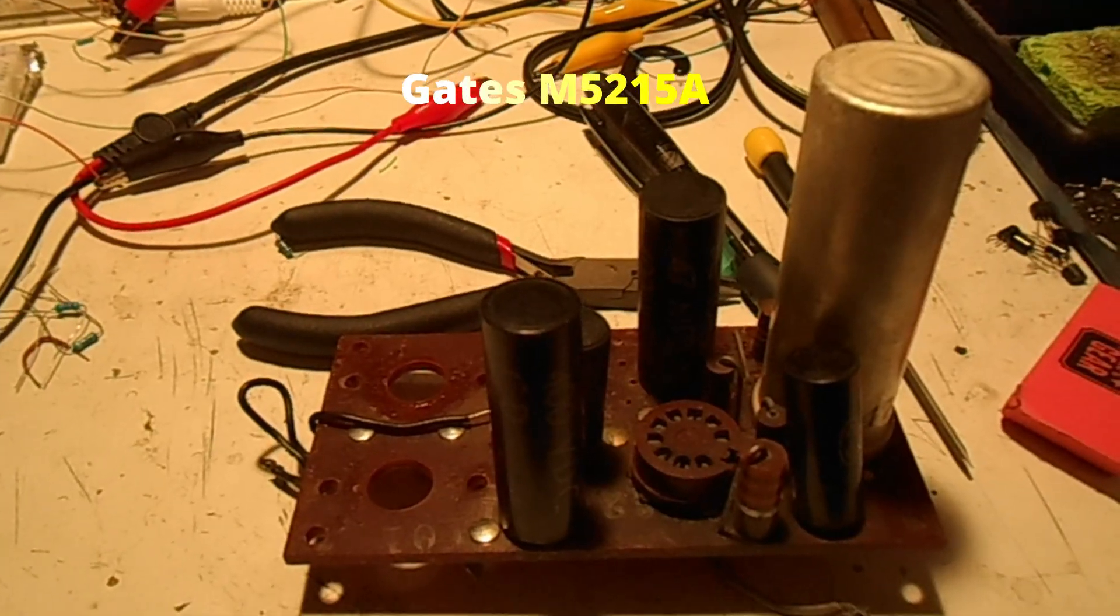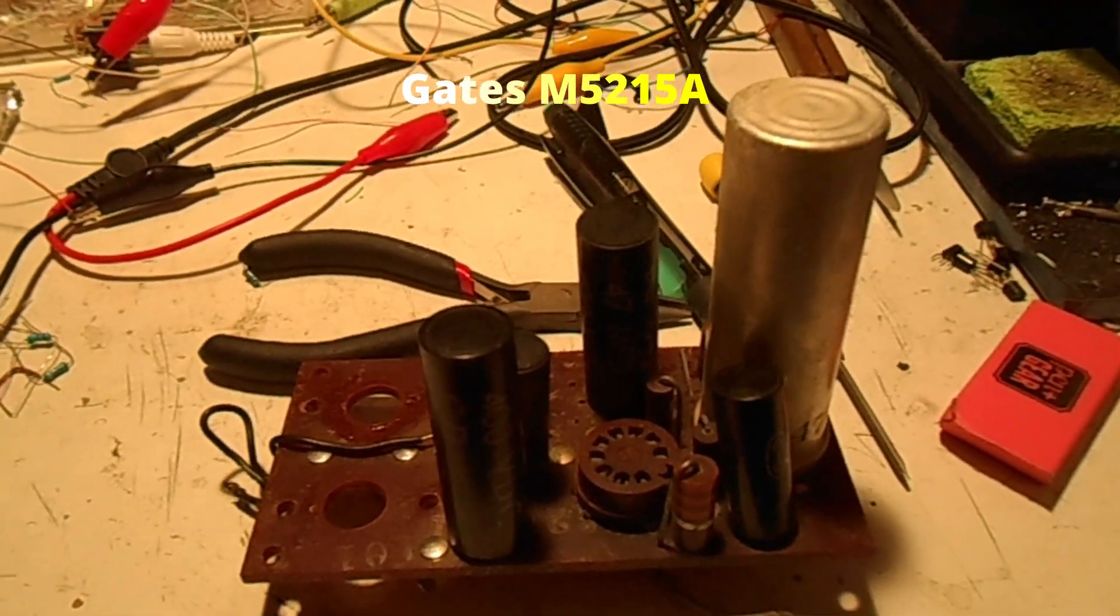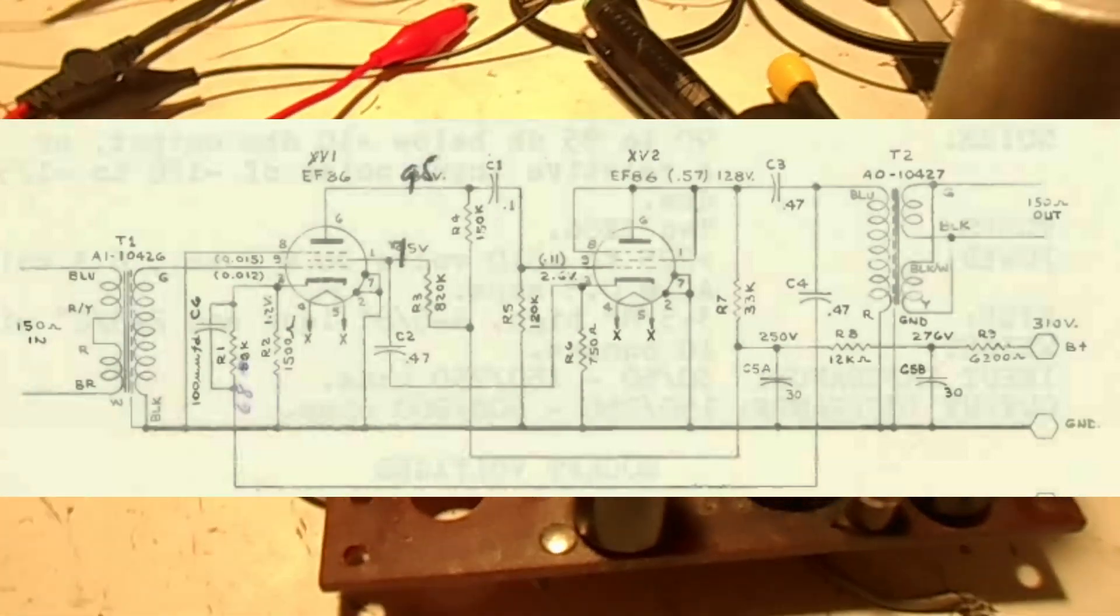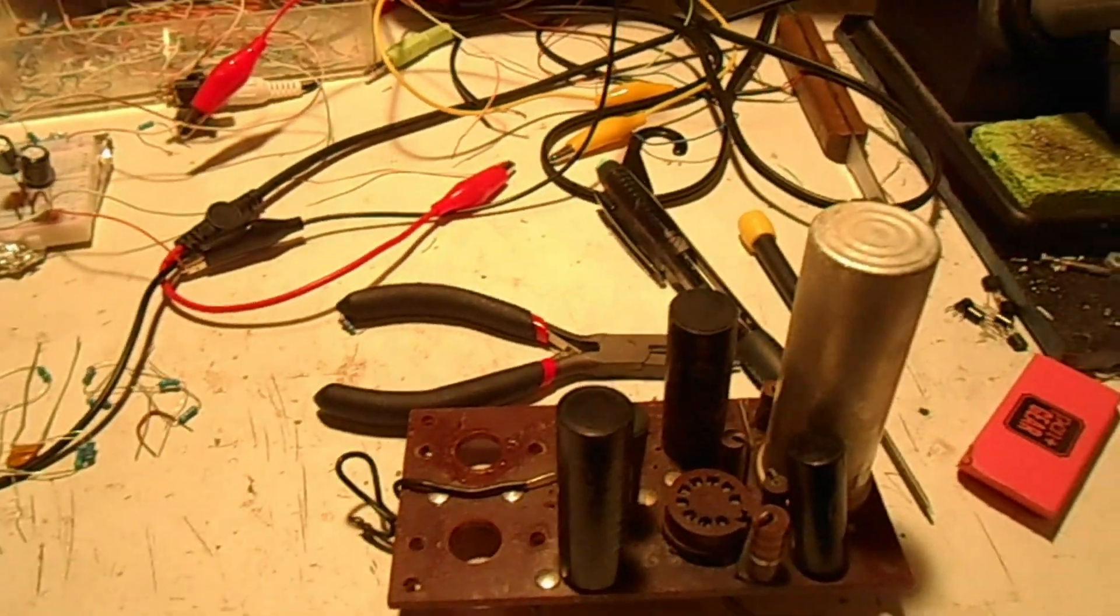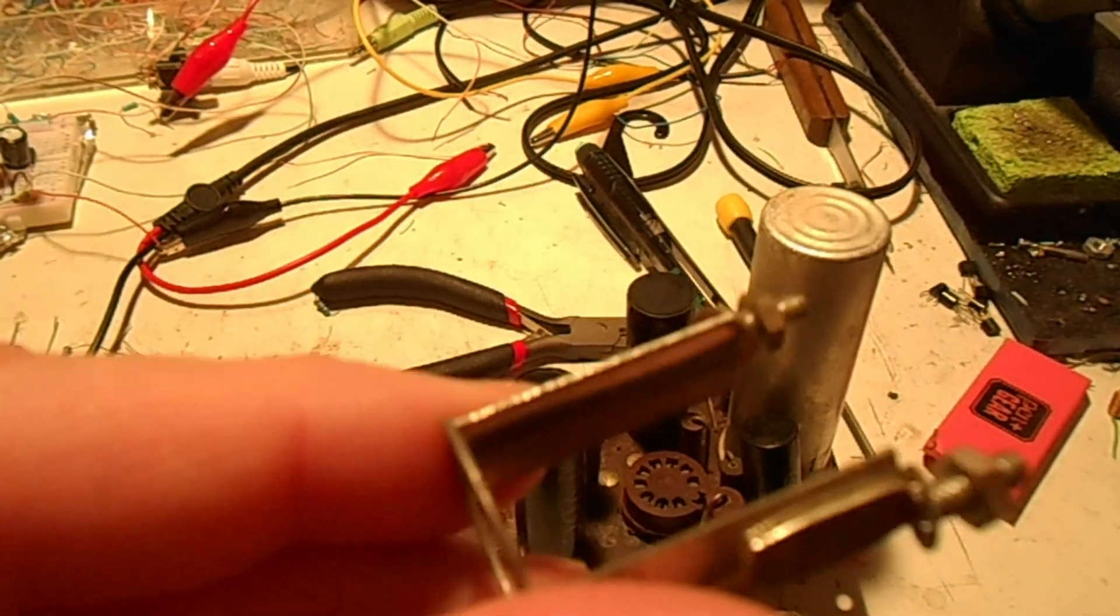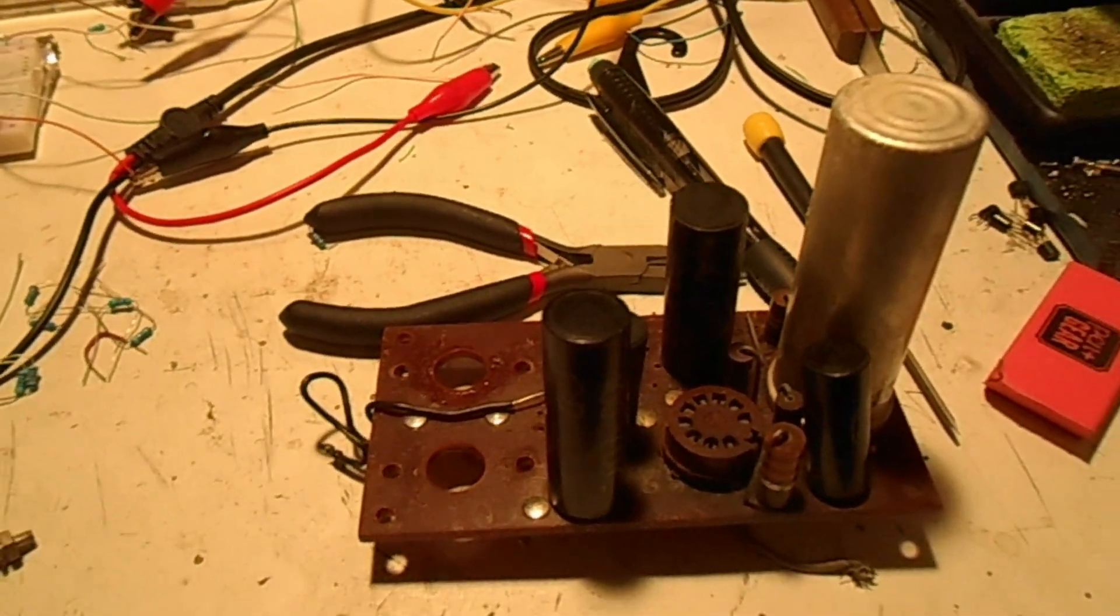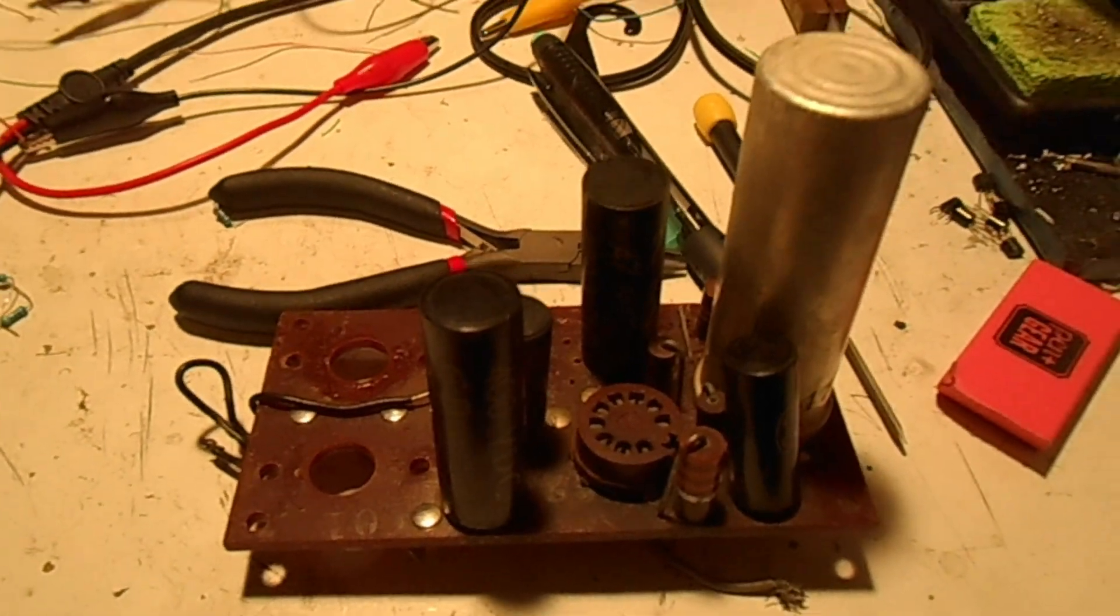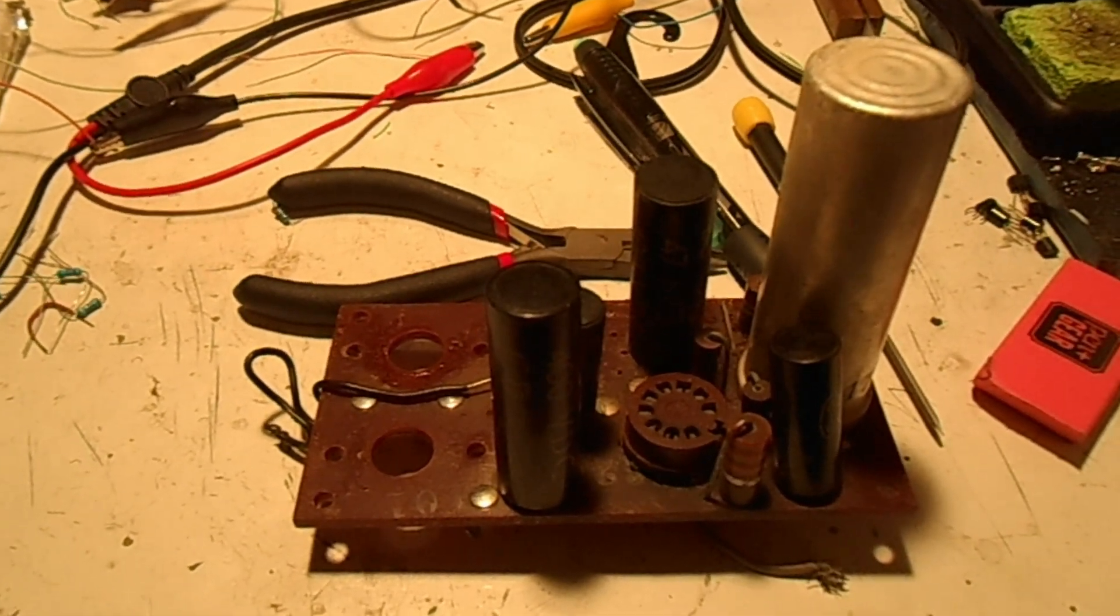This is the original card that came from the Gatesway audio console. This would have housed the actual transformers - these two holes - they would have been down in there. I do have the original mounts too that would have went over them, thankfully, because I kind of need those to use them in what I'm going to build here. I just find it fascinating - this was made, I'm pretty sure, in 1962.